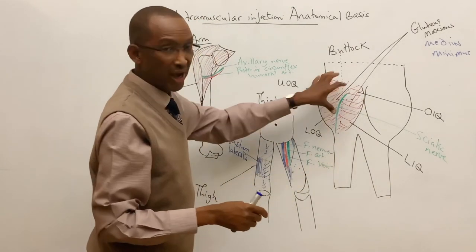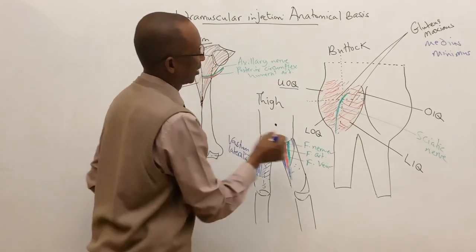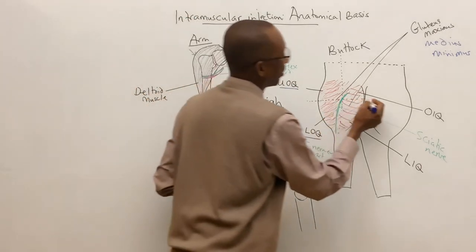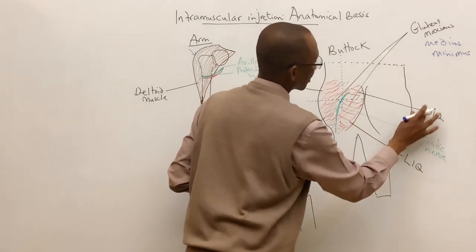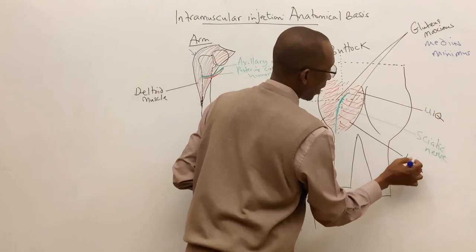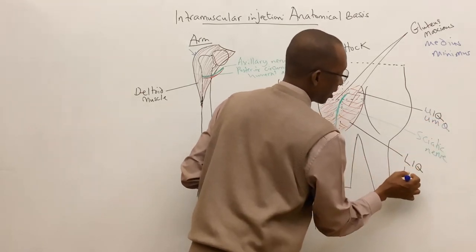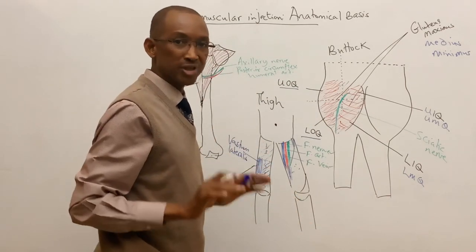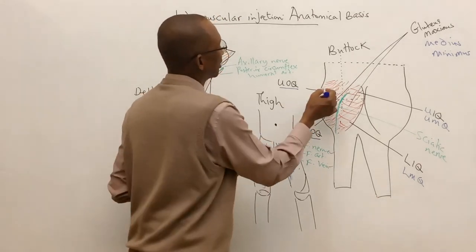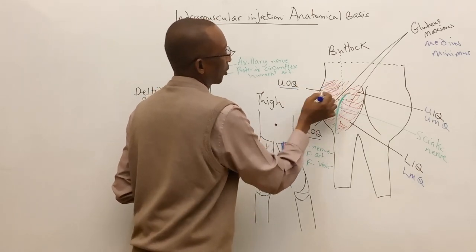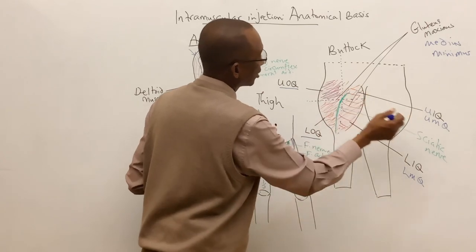These two imaginary lines — one vertical, one horizontal — divide the posterior buttocks into four quadrants: the upper outer quadrant, lower outer quadrant, upper inner (medial) quadrant, and lower inner (medial) quadrant. The best place to give an intramuscular injection in the buttocks is the upper outer quadrant, as it is devoid of any major neurovascular structures.